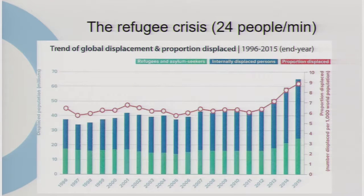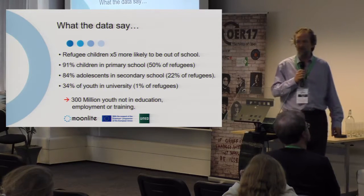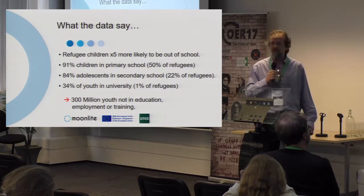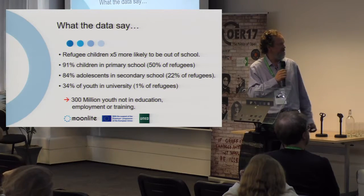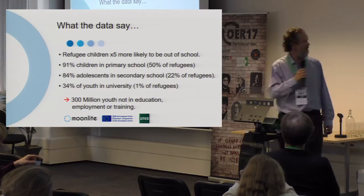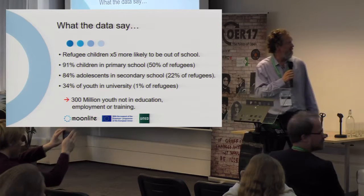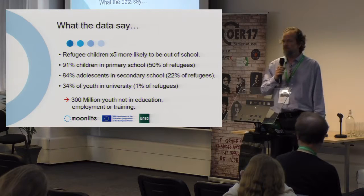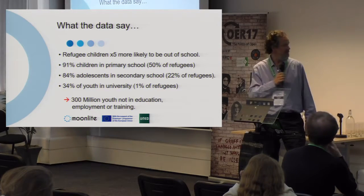The idea that there are 24 people a minute being forced to move away from their home due to natural disasters or war made it something that really needed to be addressed. If we pay particular attention to education, this is even more poignant. Refugee children are five times more likely to be out of formal schooling. 91% of children are in primary education compared to only 50% of refugees; 84% of adolescents in secondary education compared to 22% of refugees; 34% of youth in universities and only 1% of refugees — around 300 million youth not in any form of education.